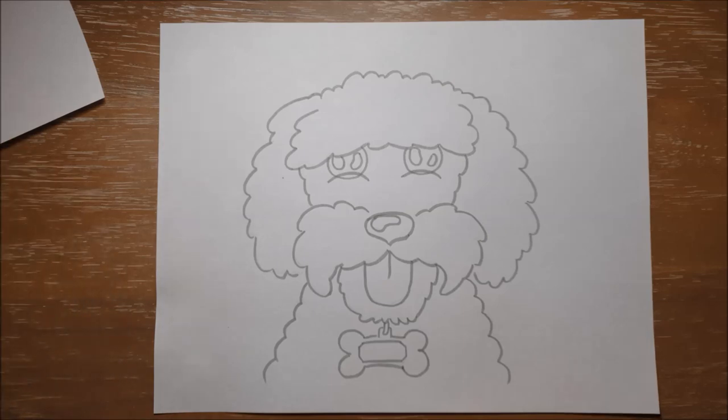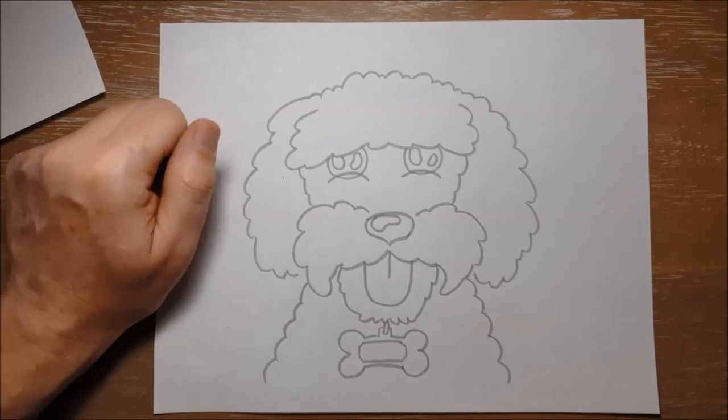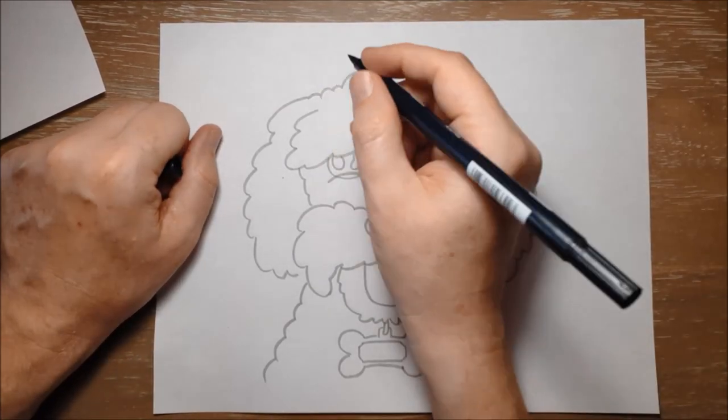So then you can grab your black pencil crayon or your black marker to outline. So I said at the beginning that Lola is a dog, but she's a special breed of dog called a Bernadoodle.